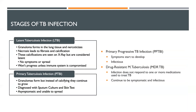There are different stages of TB infection, starting with the latent tuberculosis infection, or LTBI. This is when granulomas form in the lung tissue and necrotize. The necrosis leads to fibrosis and calcification of the granuloma, and since it's calcified, it prevents the granuloma from growing and causing infection. We can see these calcifications on x-rays, but they're considered latent because it does not spread and does not show any symptoms. Most people stay in this stage, and it won't progress unless the immune system is compromised.